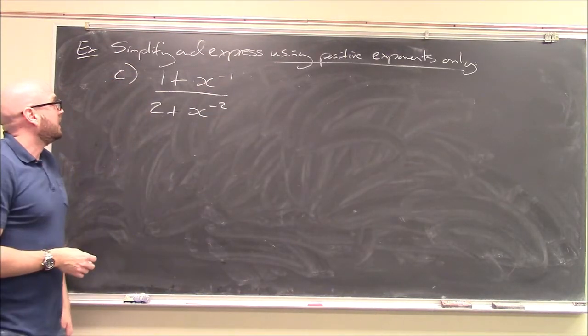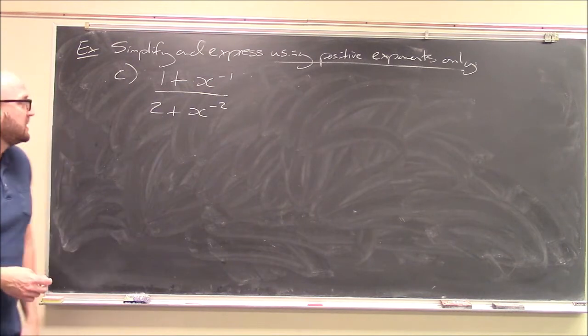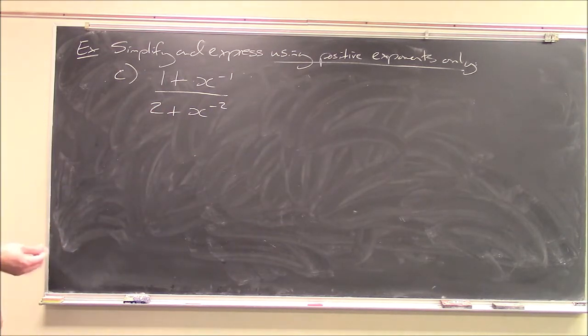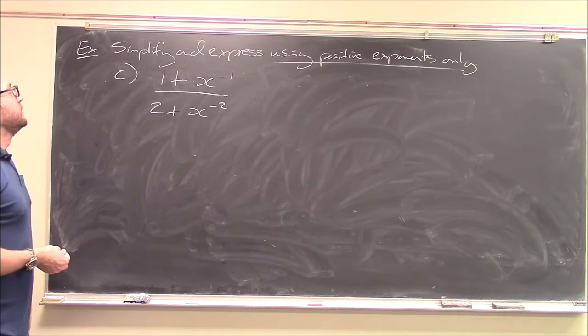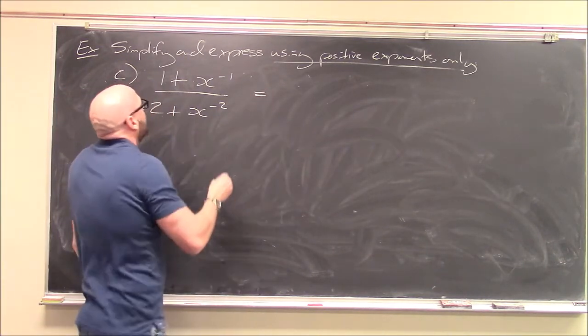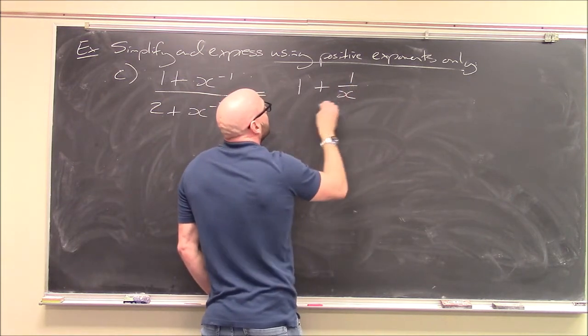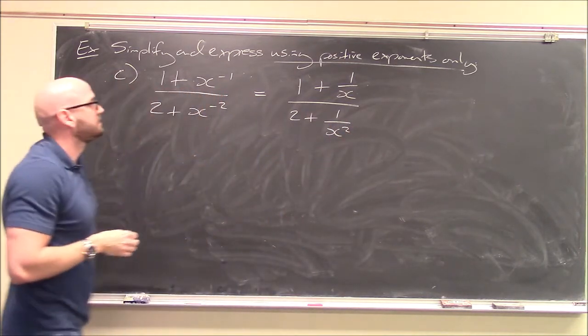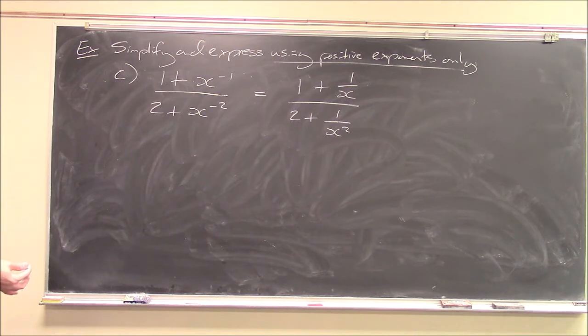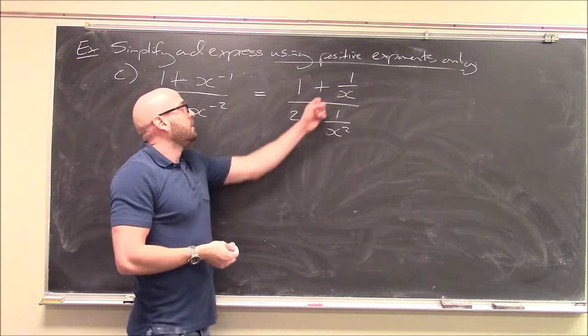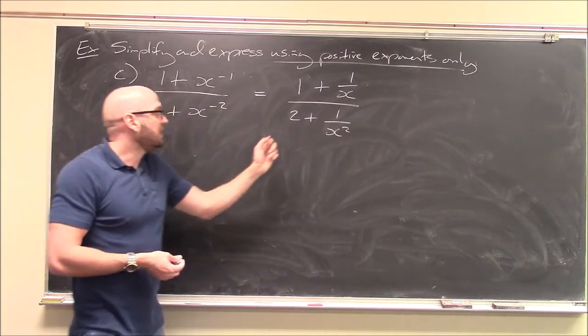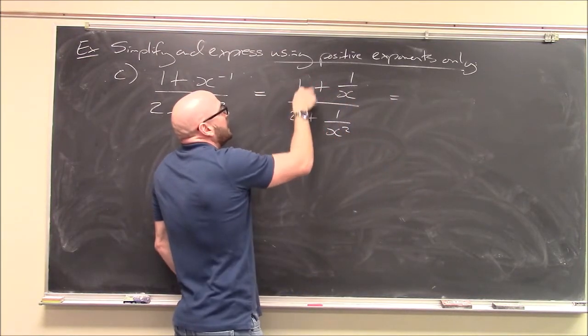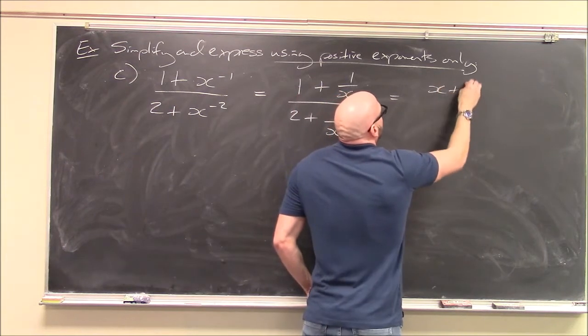And I'd like to do one more that refers back to our last section, which is, I've got 1 plus x to the minus 1 over 2 plus x to the minus 2, and I want to simplify this and express it using positive exponents only. Okay, so let's see, this is 1 plus 1 over x over 2 plus 1 over x squared. Alright, and now this is a compound fraction from last time. If I want to simplify this further, what I want to do is combine the tops and bottoms into single fractions. And then I can divide them from there.